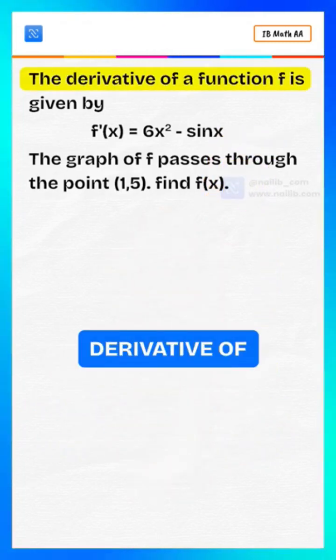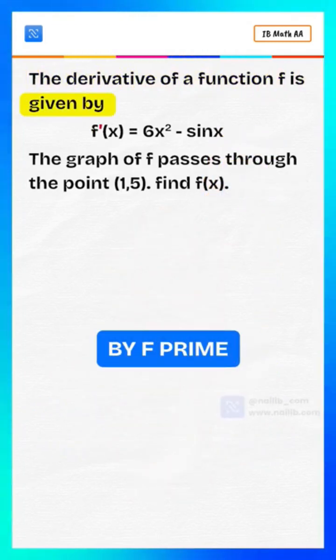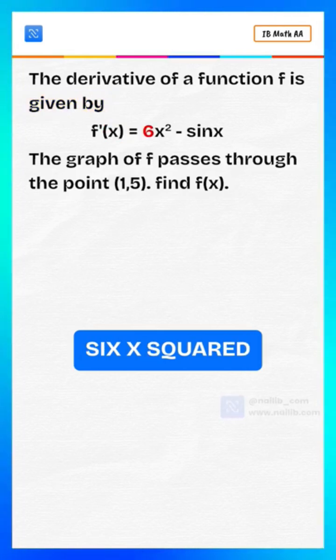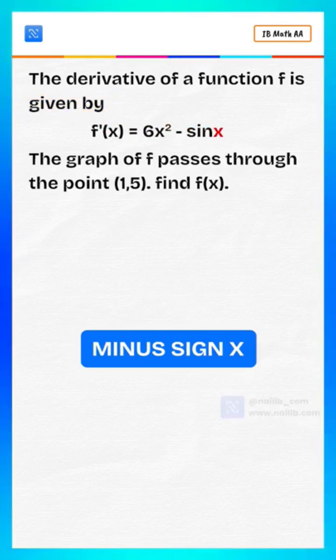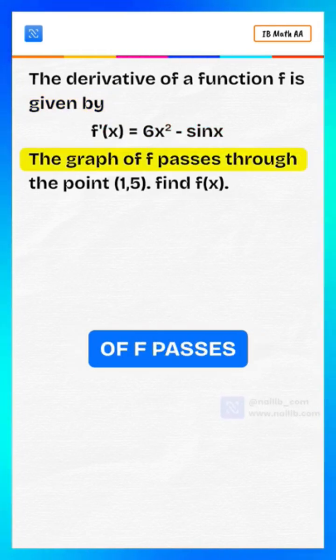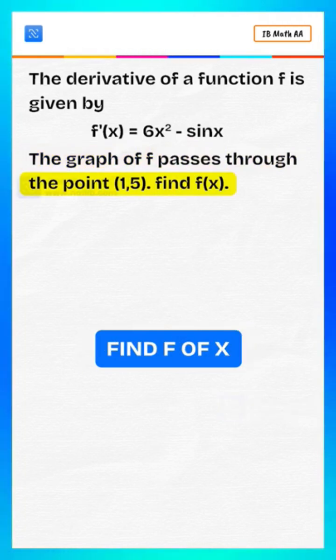The derivative of a function f is given by f prime of x equals 6x squared minus sine x. The graph of f passes through the point (1, 5). Find f of x.